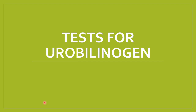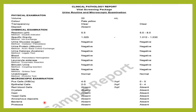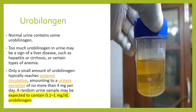Welcome to classes by Lab Doctor. Today we will look at the tests used to find urobilinogen in urine. Normally, urobilinogen is present in a very small quantity — around 0.1 to 1 milligram per deciliter is normal. The excretion of urobilinogen should not exceed more than 4 milligrams per day. Urobilinogen gives the urine its yellowish tinge.